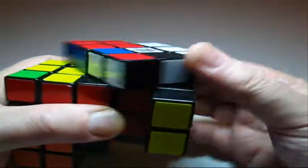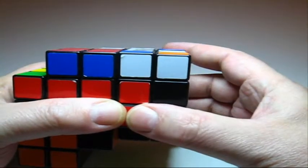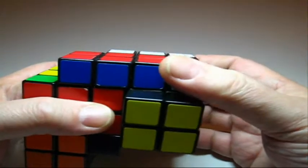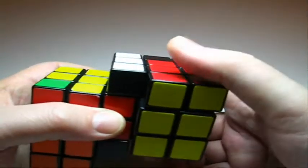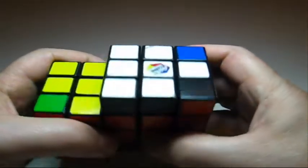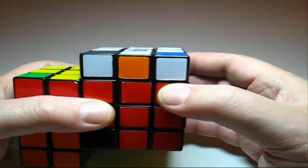Then you do the contrary. You bring both up, you do up inverted, and you bring both down. So now you got your cross.